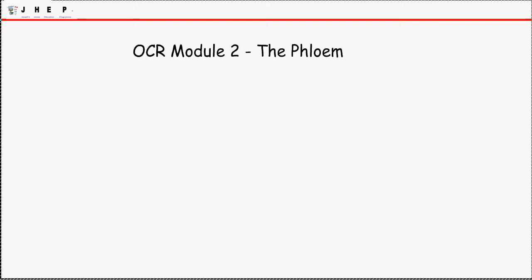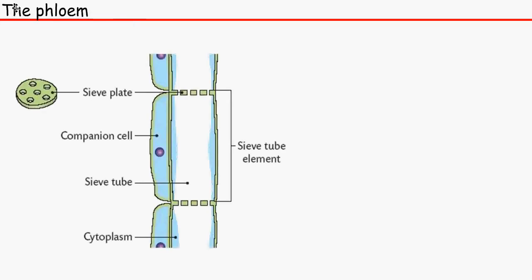So the structure of it looks like this. You've got it split into two sections: you've got the sieve tube elements and you've got the companion cells.